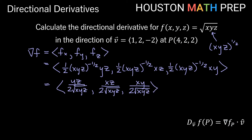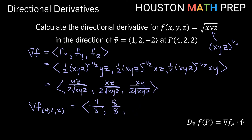Evaluating the gradient at (4, 2, 2): the denominator is 2√(4·2·2) = 2√16 = 2·4 = 8 for all components. The numerators are: yz = 2·2 = 4, xz = 4·2 = 8, and xy = 4·2 = 8. So the gradient at (4, 2, 2) is (4/8, 8/8, 8/8) = (1/2, 1, 1).